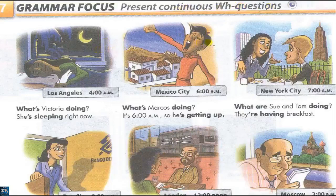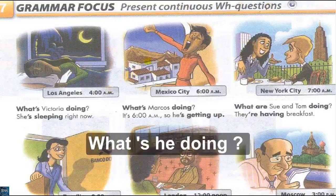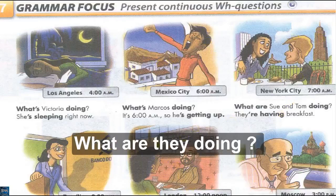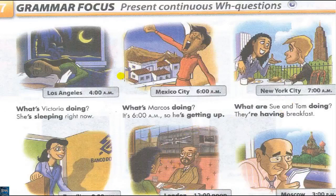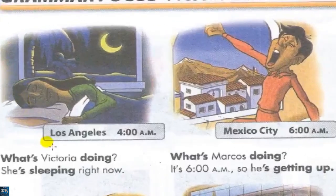Listen, please. Page 33, Exercise 7, Grammar Focus, Present Continuous, WH Questions. Los Angeles, 4 AM. What's Victoria doing? She's sleeping right now. Mexico City, 6 AM. What's Marcos doing? It's 6 AM, so he's getting up. New York City, 7 AM. What are Sue and Tom doing? They're having breakfast.